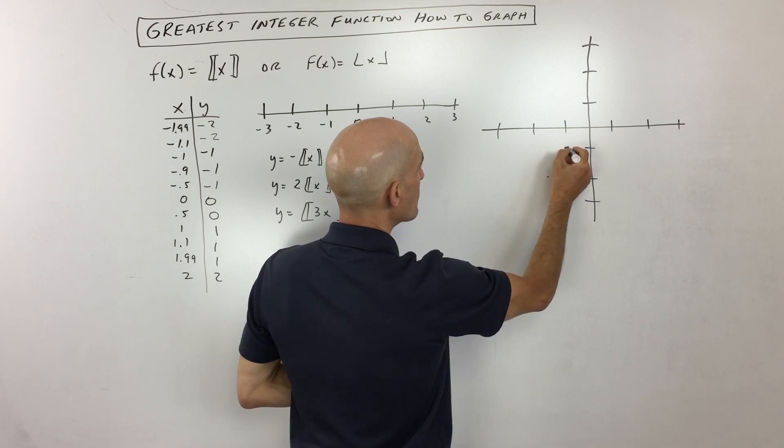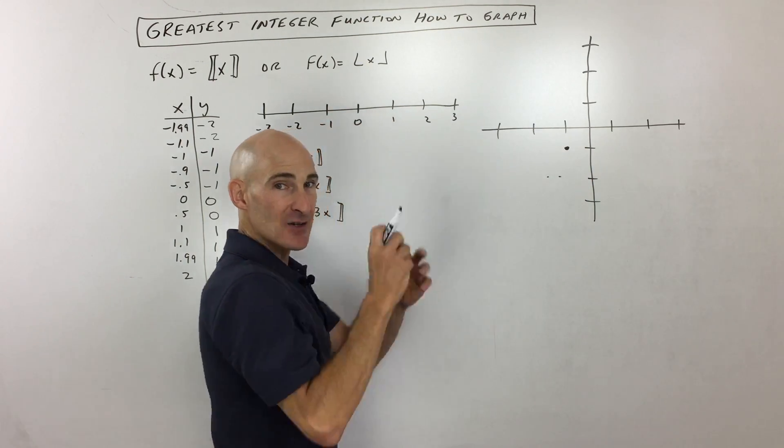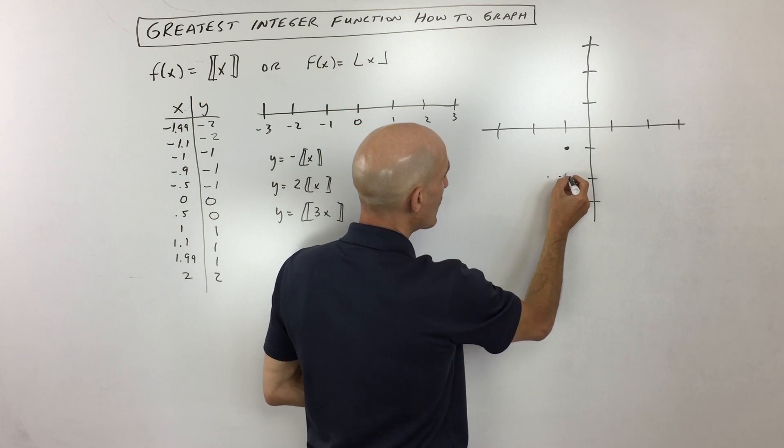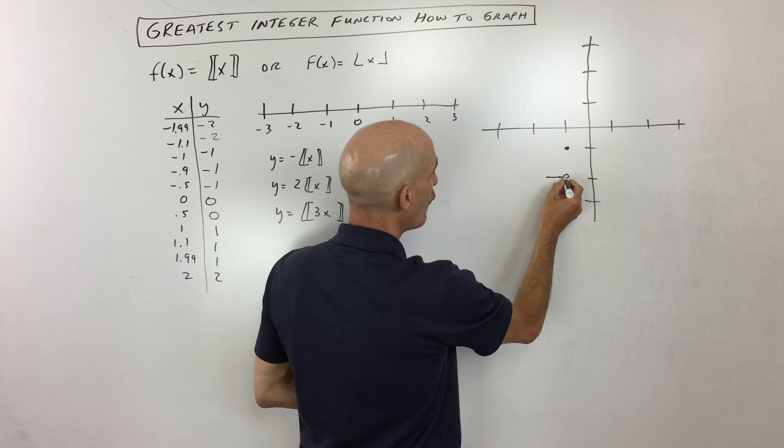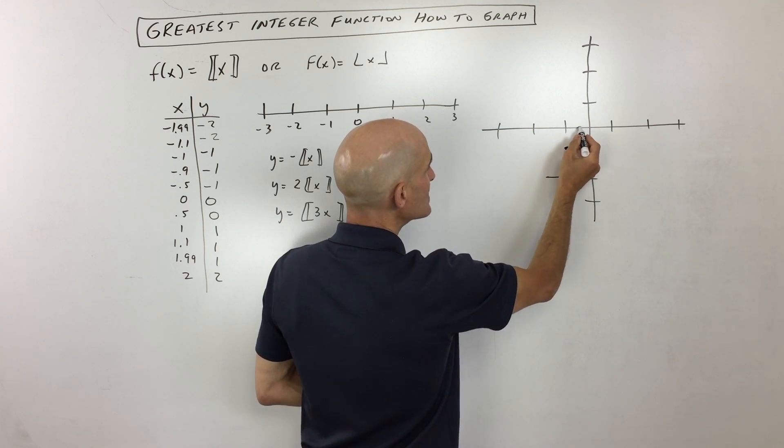Now you're at negative 1. So what I'm going to do is I'm going to put a closed point right there. Over here, I'm going to write an open point. So what happened is we're approaching negative 1. As soon as we got to negative 1, it jumped up to negative 1.